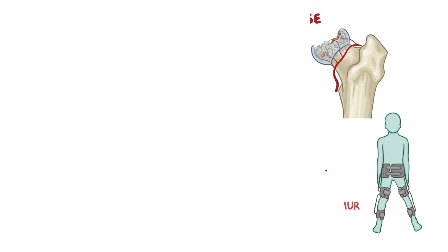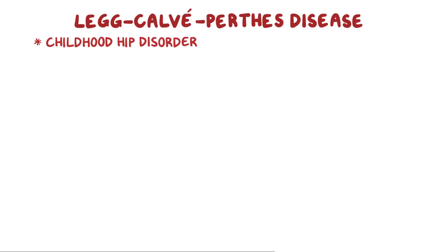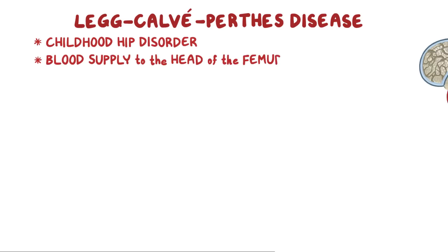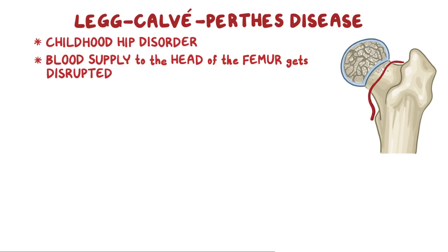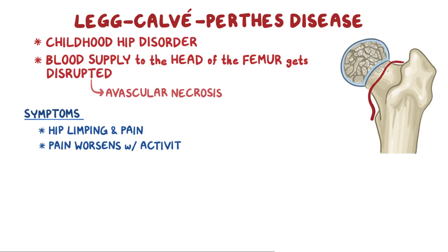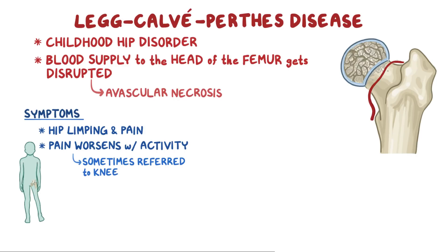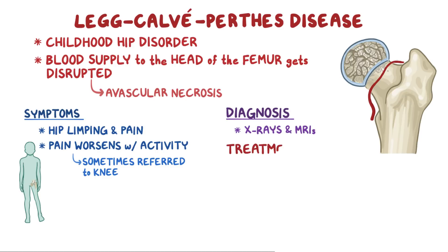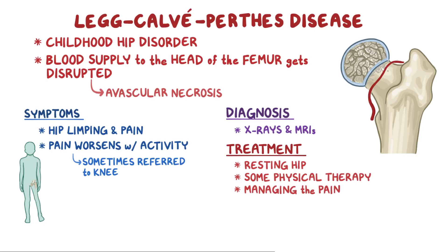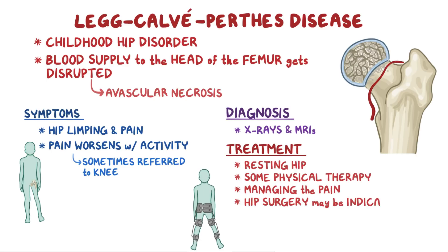As a quick recap, Legg-Calvé-Perthes disease refers to a childhood hip disorder which occurs when the blood supply to the head of the femur is disrupted for unknown reasons, resulting in avascular necrosis of the head of the femur. Children develop hip limping and pain, which worsens with activity, and may be referred to the knee. Diagnosis is mainly done with x-rays and MRI of the affected hip. Treatment consists of resting the hip, physical therapy, and managing the pain, though hip surgery may also be indicated.